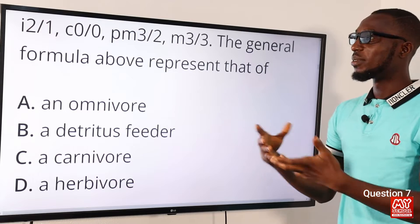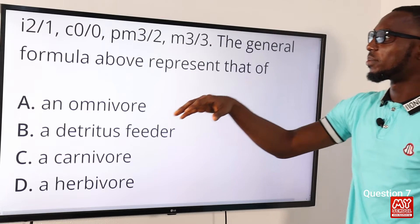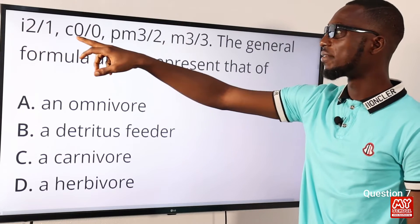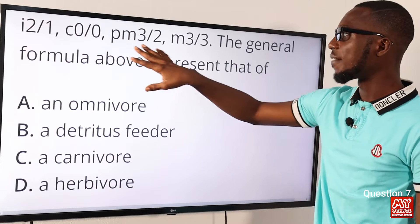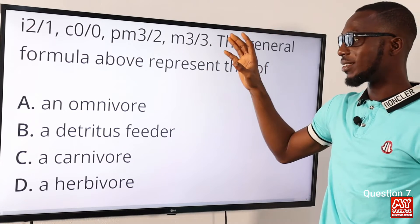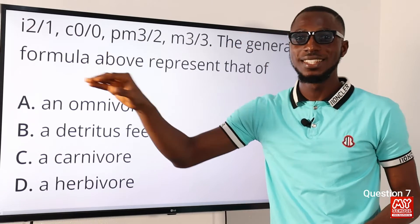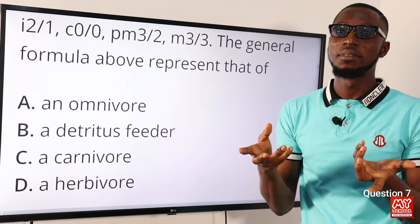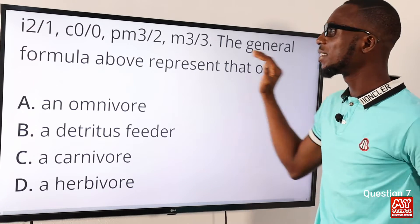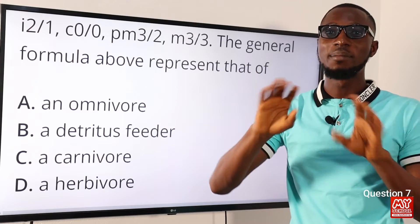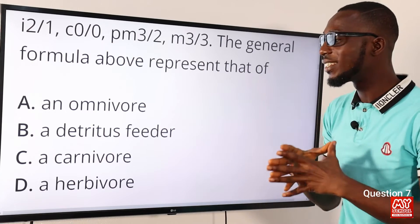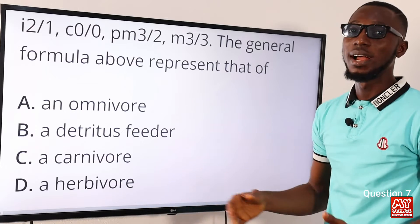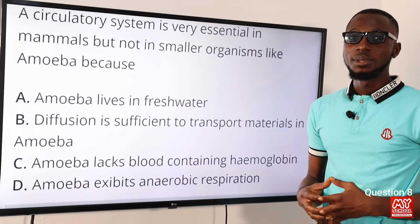Question seven: the general formula represents a dentition. We have incisors two up, one down; canine zero-zero, which is absent; premolars and molars. Since canines are absent, the animal is definitely herbivorous. This particular dentition is found in rabbits — so the correct option is option D for herbivore.